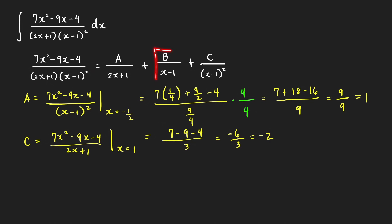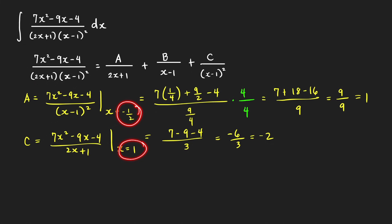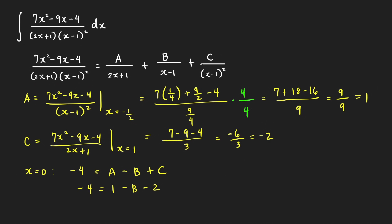To find b, we cannot use the cover-up technique because covering one factor of (x minus 1) still leaves another (x minus 1) in the denominator, making it 0 at x equals 1. So we plug in x equals 0, giving negative 4 equal to a over 1, minus b, plus c. With a equals 1 and c equals negative 2, this gives 1 minus b minus 2 equals negative 4, so b equals 3. We get the same values for a, b, and c.